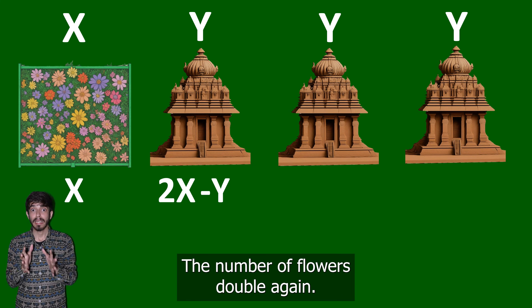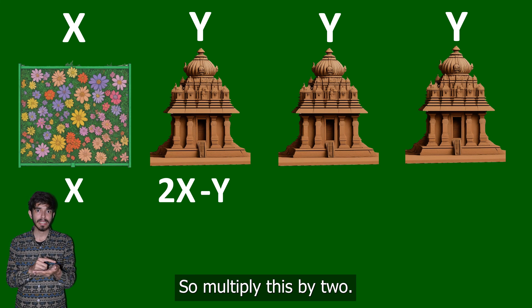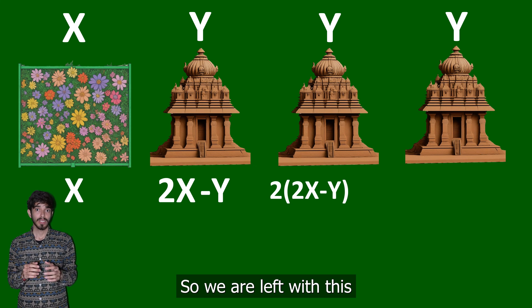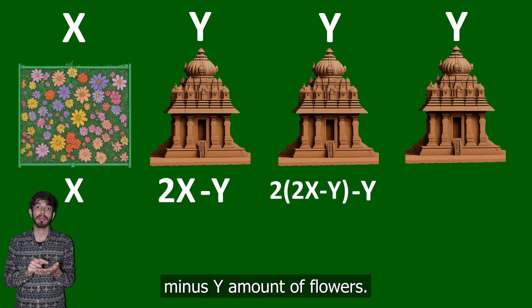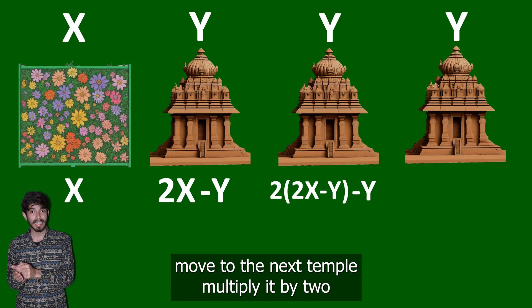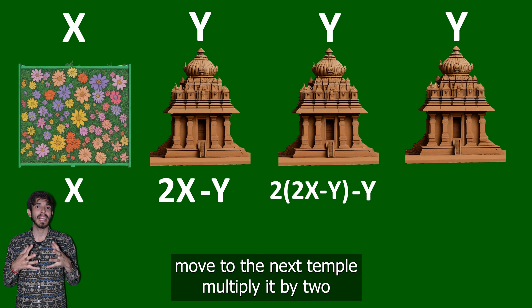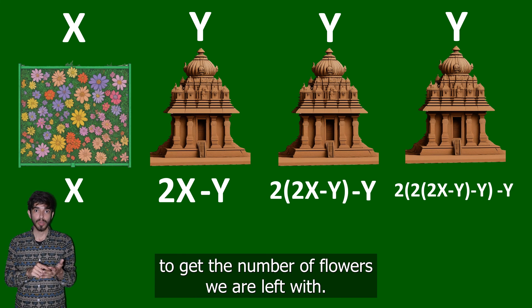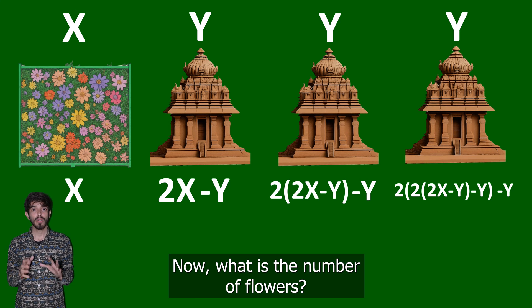He moves to the next temple and the flowers double again, so multiply by 2. He offers y flowers, leaving 2(2x − y) − y. He moves to the third temple, multiply by 2 again, then subtract y to get the number of flowers remaining.